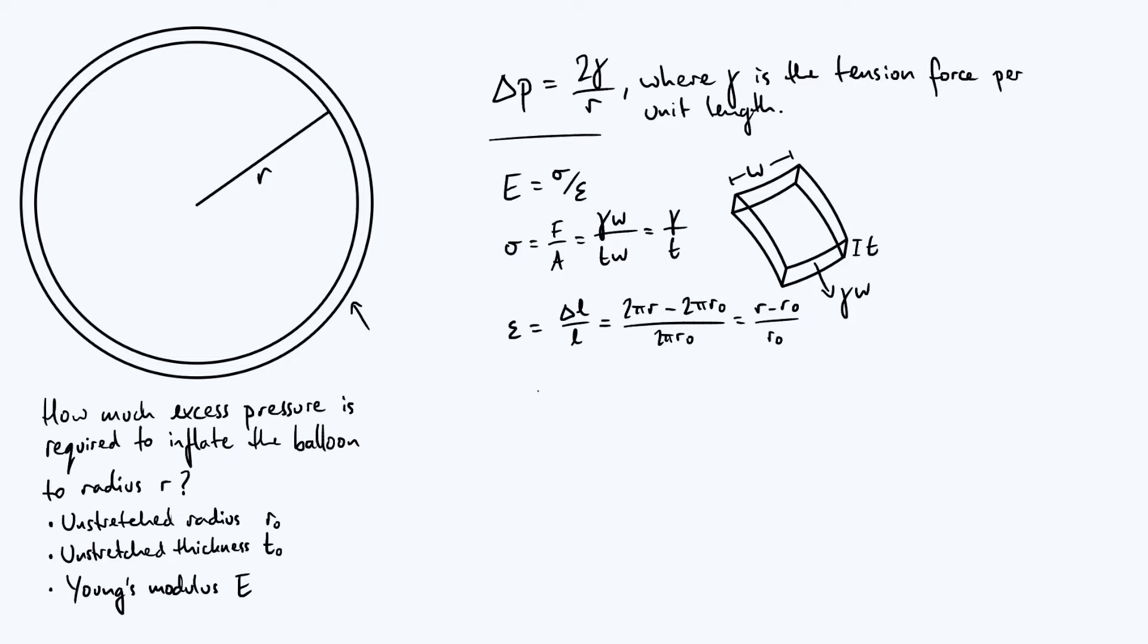So now we've got expressions for both the stress and the strain. Let's plug them back into our definition of the Young's modulus. So E is going to be equal to σ, which is γ divided by T, and then we've got that divided by ε, the strain.